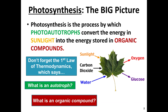What is an organic compound? We define an organic compound as a molecule that contains typically carbon and hydrogen. Some examples of that could be carbohydrates, which is the primary product of photosynthesis, or we could have lipids, proteins, and nucleic acids.